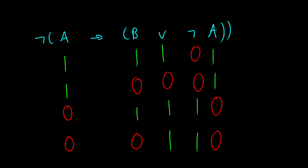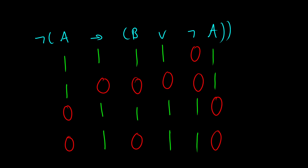Next, we're going to do the arrow, taking information from the OR column and from A. It's only false if we have 1 arrow 0. In the second row we see 1 arrow 0, so that'll be false. First row: 1 arrow 1 — true. Third row: 0 arrow 1 — true. Fourth row: 0 arrow 1 — true. Then we negate the entire thing, flipping 1, 0, 1, 1 to become 0, 1, 0, 0.